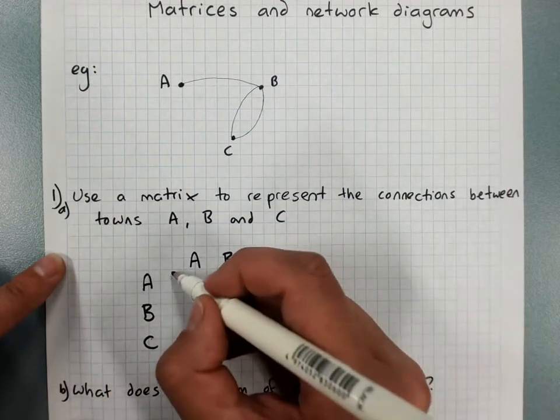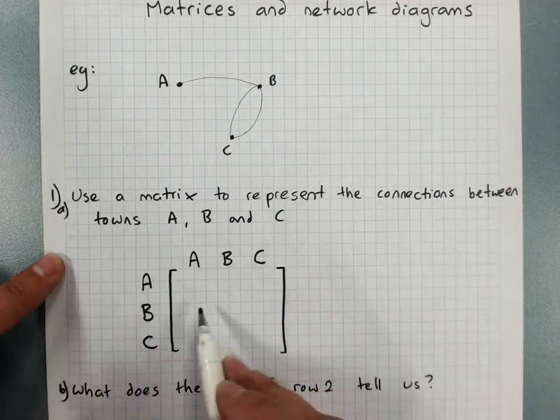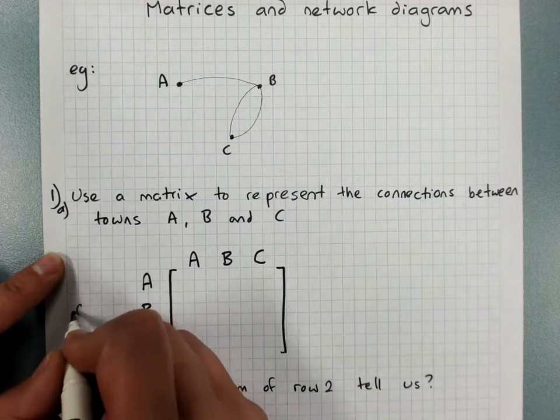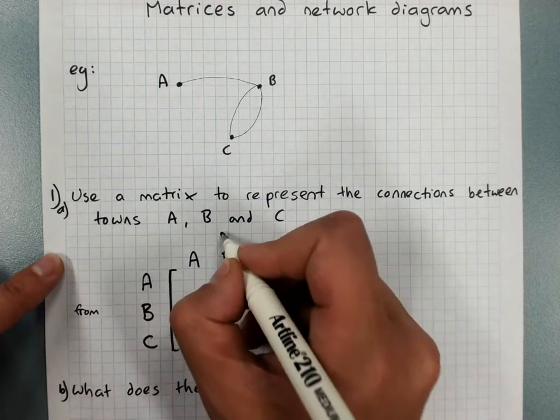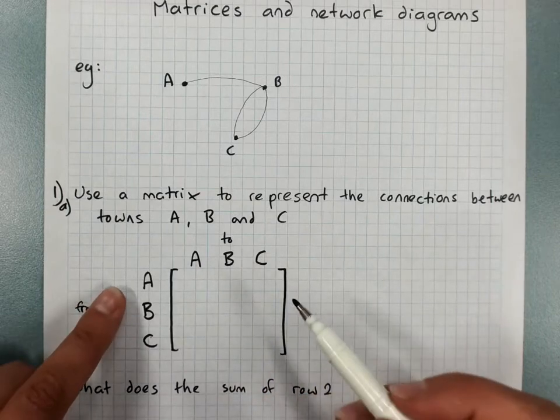You can label the rows on either side. I tend to prefer labelling them on the left because we read rows then columns. And this is from here to here, but we don't need to label from and to if we don't want.